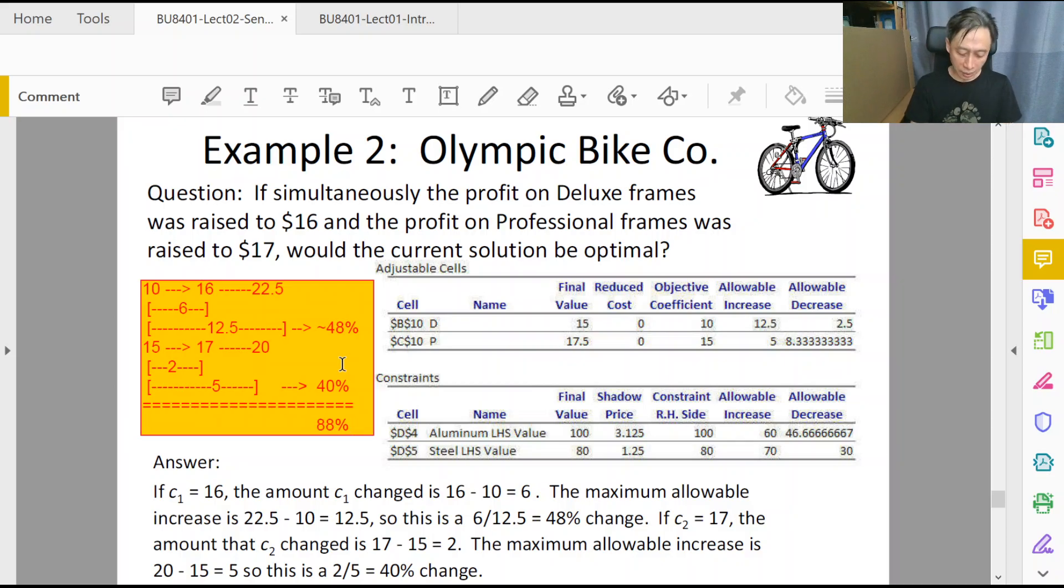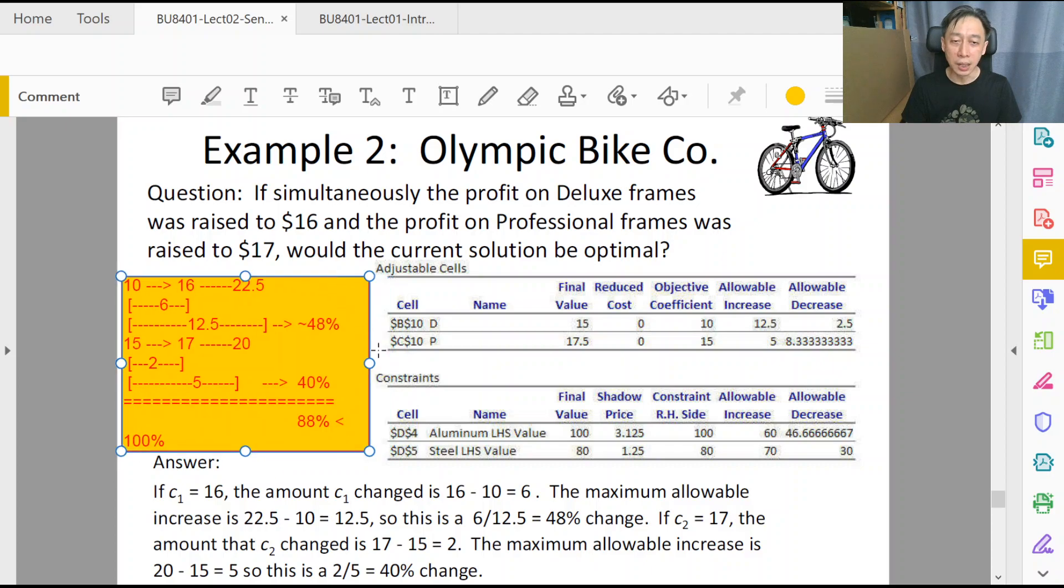So in total, these two changes will induce an aggregate of 88%, and it's less than 100%. So this is the 100% rule - this is the important check that we need to do to ensure that the guarantee still holds. What is the guarantee? Because we are having simultaneous changes in the first half of the sensitivity report, the guarantee is that the optimal solution will not change, so long as it is less than 100%. Here we are having two roughly large changes like 48% and 40%. You could also have ten little changes like each one having 7% or 9% changes, so that they add up to no more than 100%.